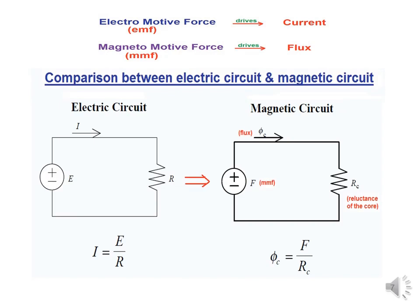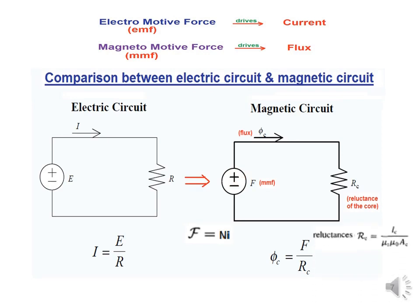The electromotive force in an electric circuit drives current through the circuit. Similarly, in a magnetic circuit, the magnetomotive force drives flux phi through the circuit. Just as current I equals EMF E divided by resistance R, the flux phi equals magnetomotive force F divided by reluctance R. The magnetomotive force is N times I for an electromagnet, and the reluctance is LC divided by mu-r, mu-naught, and AC.